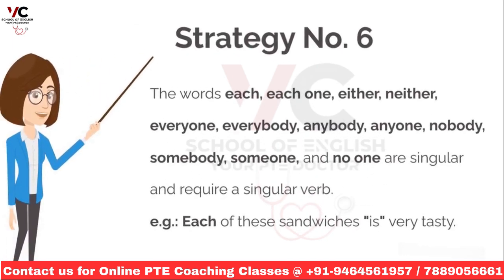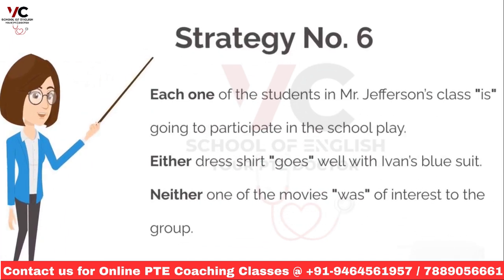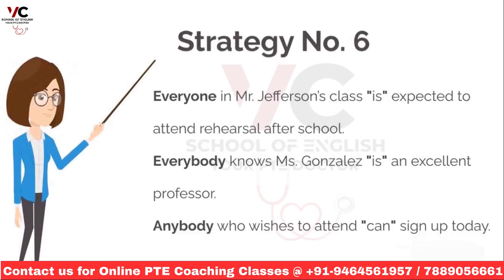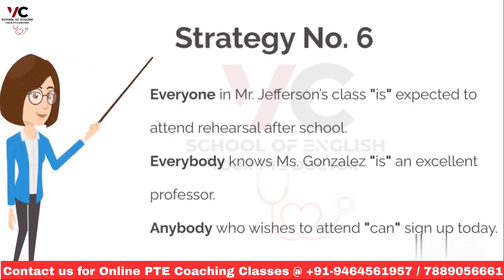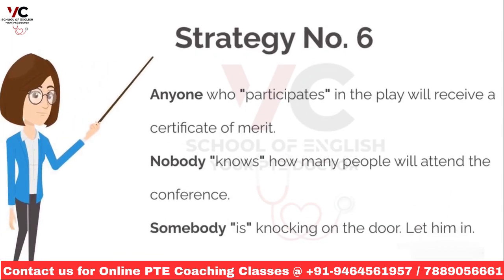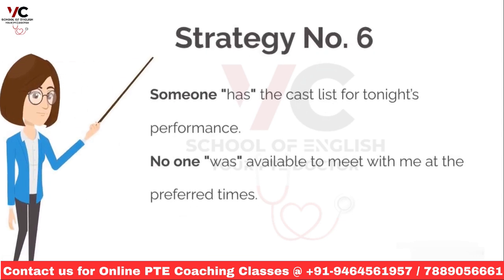The words each, each one, either, neither, everyone, everybody, anybody, anyone, nobody, somebody, someone, and no one are singular and require a singular verb. For example: each of these sandwiches is. Each one of the students in Mr. Jefferson's class is. Either dress shirt goes. Neither one of the movies was. Everyone in Mr. Jefferson's class is. Everybody knows Ms. Gonzalez is. Anybody who wishes to attend can. Anyone who participates. Nobody knows. Somebody is. Someone has. No one was.